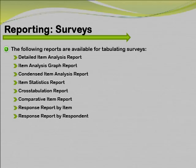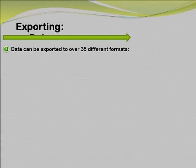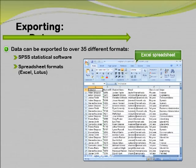The item statistics report displays descriptive statistical information for each question. The statistics are displayed in groups, allowing you to show or hide the group you need. The cross-tabulation report describes the distribution of two variables simultaneously. The comparative item report compares performance for various demographics included in the survey. And finally, the response report by item and response report by respondent provide a listing of responses to particular questions. These are generally used to display answers given for open-ended questions.